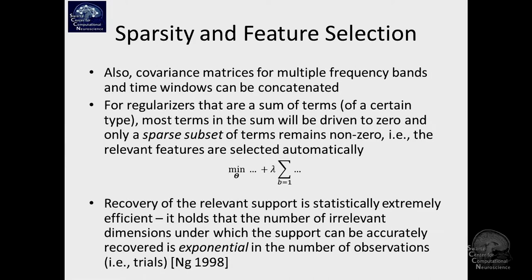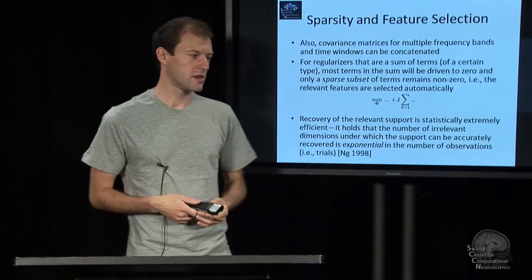can be done with very, very high statistical efficiency. You can basically find out which is the right non-zero pattern for some data for a number of irrelevant features. It's basically exponential in the number of observations that you had. So if you have 100 trials, you can learn which ones are the right features out of a million features or something like that.